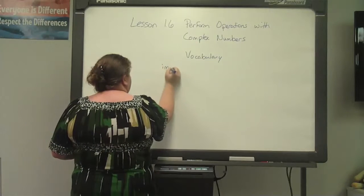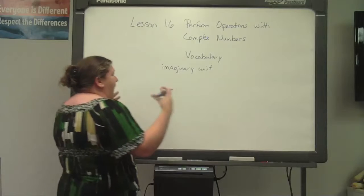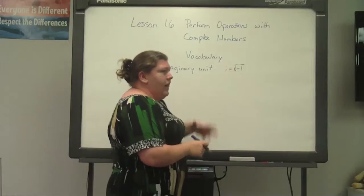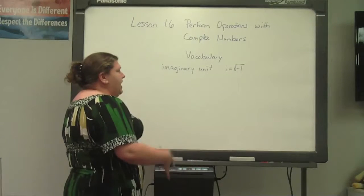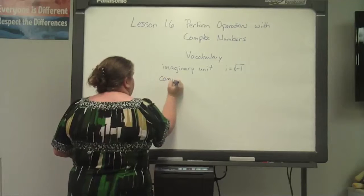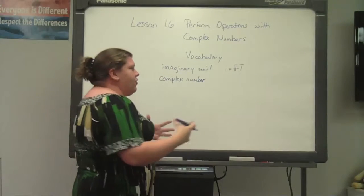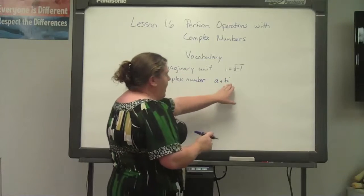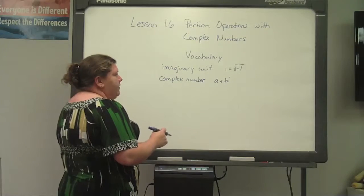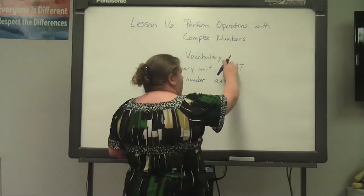The first vocabulary term is the imaginary unit. The imaginary unit is i, equaling the square root of negative one. The reason why we use imaginary is because you cannot find a square root of a negative number. So we rewrite it as a complex number. Any time you see a negative inside of a radical sign, automatically make an i. The i goes on the outside and it takes away the negative.